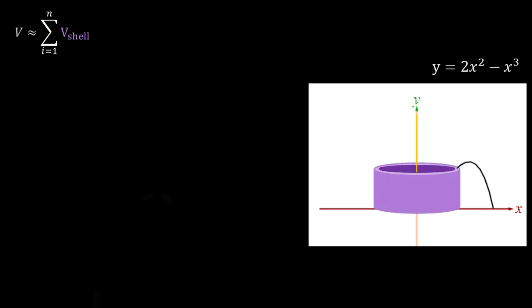So this would be an example of a shell here where before we find the volume of it let's just look at a couple parameters here. So it's going to have a height of h shown here. And we're going to want to define the radius of our shell so we'll call that r. And lastly we're going to want to define the thickness of our shell which we'll call that delta x because that's going to be in the x direction here.